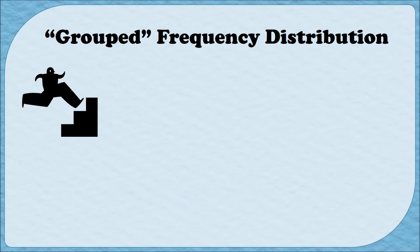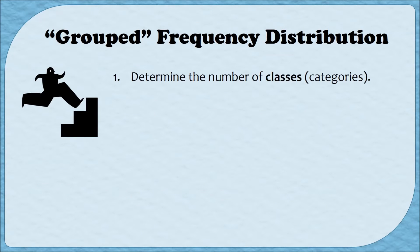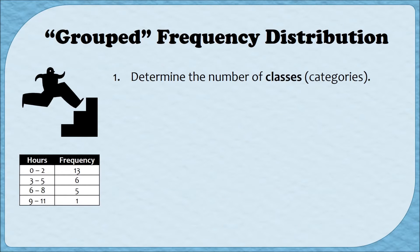There are six steps to forming a grouped frequency distribution. The first step is to determine how many categories or how many classes you want to have. To make these steps a little bit more sense, let's look at the frequency distribution we just saw. In this frequency distribution, we have one, two, three, four rows. So because there are four rows, there are four categories or four classes.